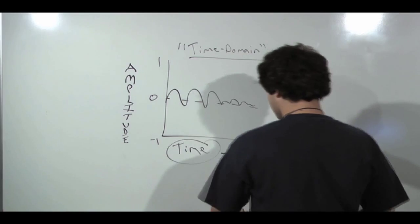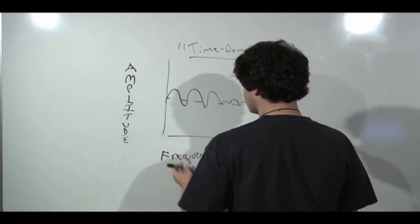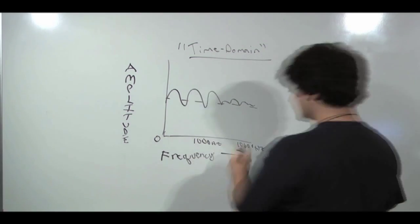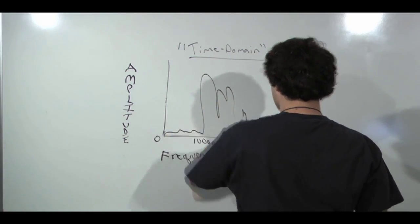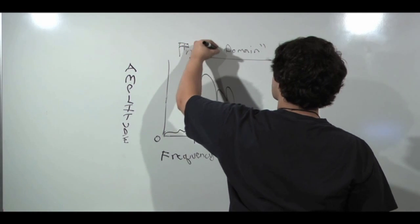In order to see what frequencies are present in a sound, we swap out time from the x-axis and replace it with frequency. Now we can see all the frequencies present in a waveform and the amplitude of each frequency. We call this a frequency domain representation of sound.